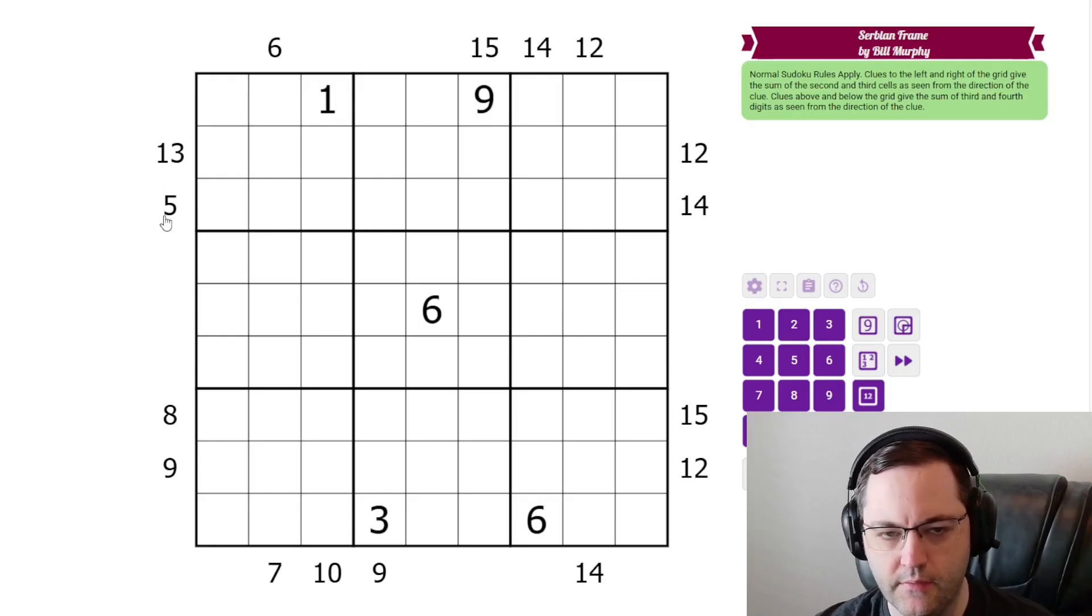So let's start with this five. Five could be one, four or two, three, but because it's referring to these two cells and there's already one in the box, it must be two, three.